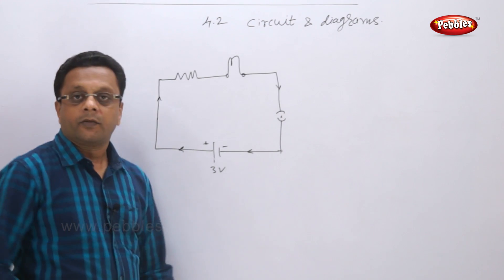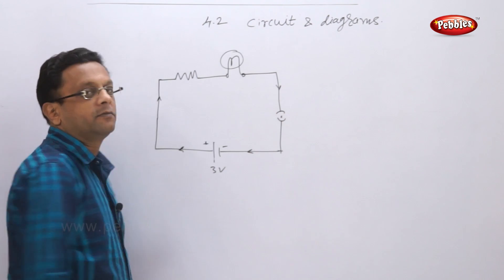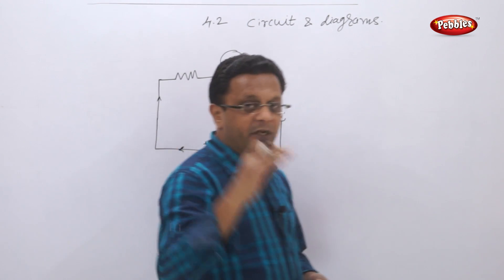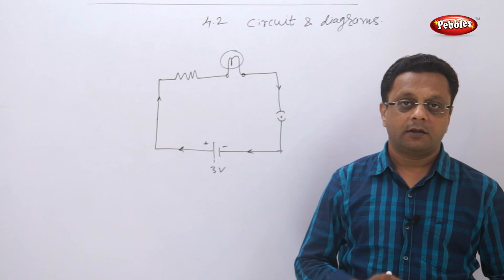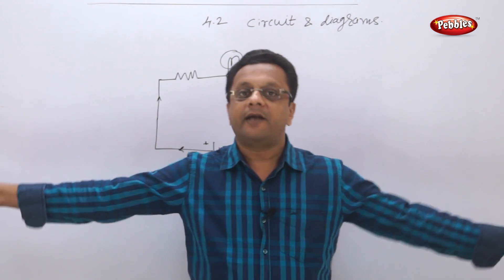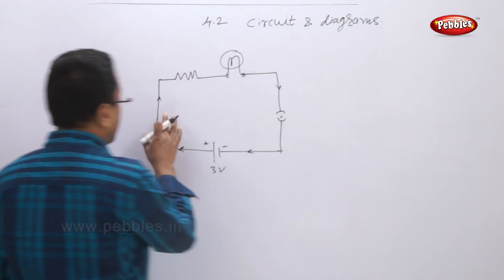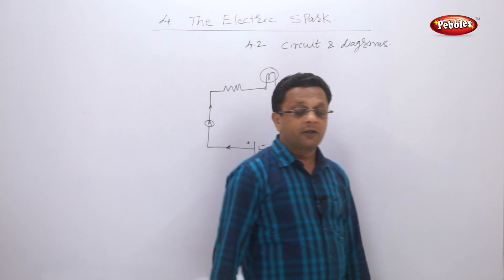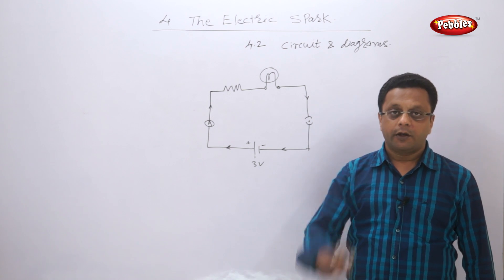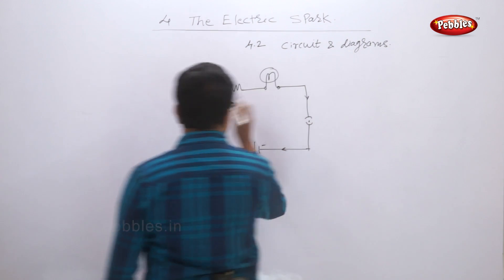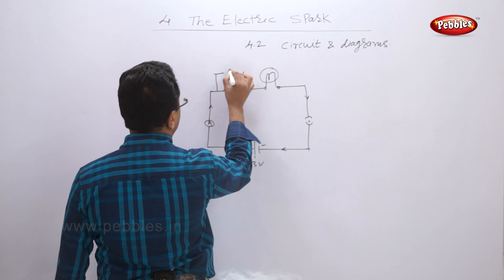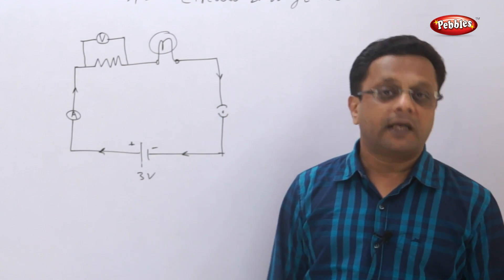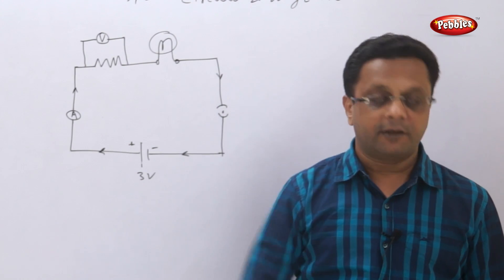If you want to measure the current, always remember the ammeter is connected in the circuit in series — that means hand to hand, one after the other. And whenever potential difference is measured, the voltmeter is always shown in parallel — somewhere across your resistance or component in the circuit. Just remember: ammeter is always connected in series and voltmeter is connected in parallel.